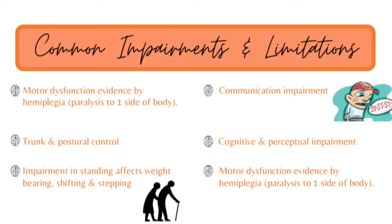Communication can be anywhere from mild to severe. I'll talk about aphasia, which goes along with communication impairment. Cognitive and perceptual impairments are also significant — these include difficulty with spatial neglect, body neglect, figure ground, attention, and orientation. I go into different intervention approaches for each one towards the end, but just know that there are cognitive impairments as well.